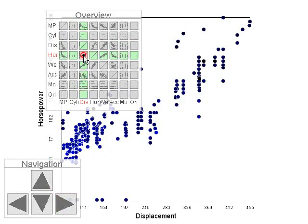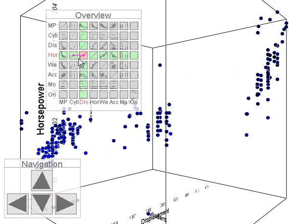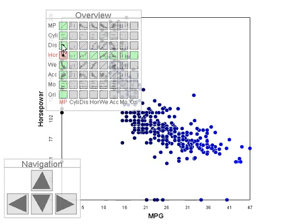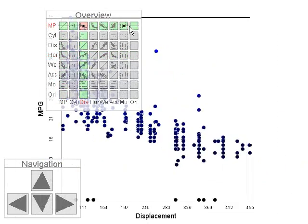The user can also scratch the current position in the matrix to see the animated transition from one dimension to the next. To move directly from one part of the scatterplot matrix to another, it is also possible to perform a hyperjump.